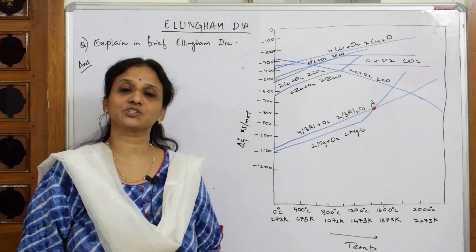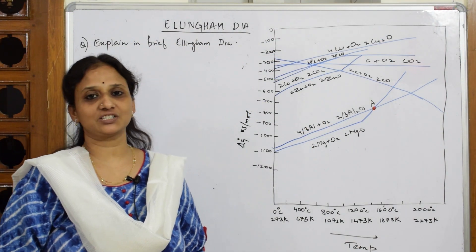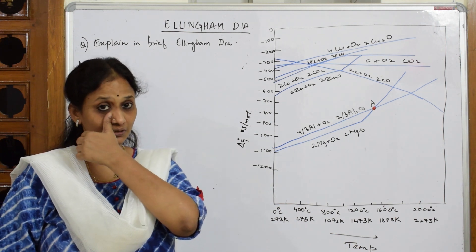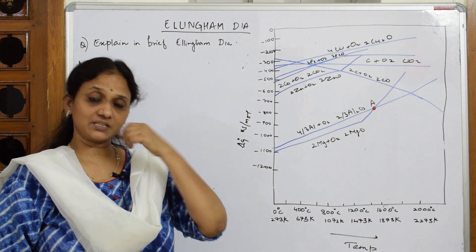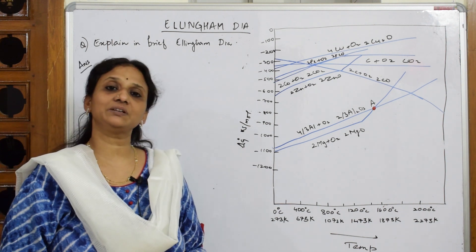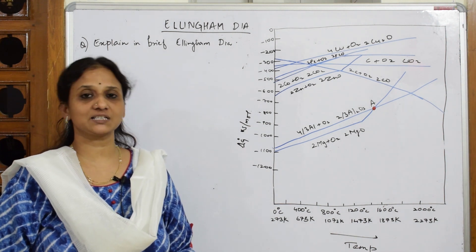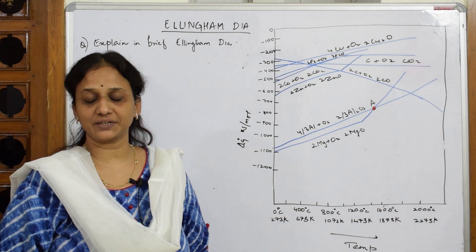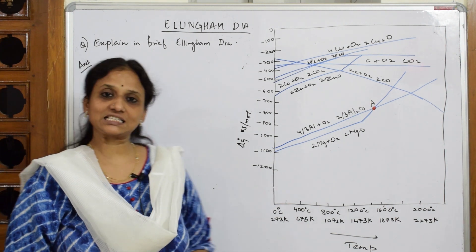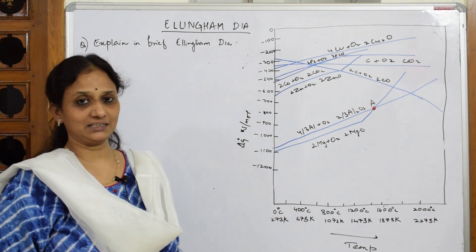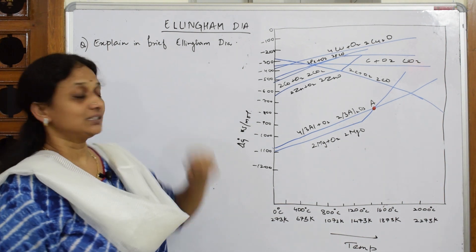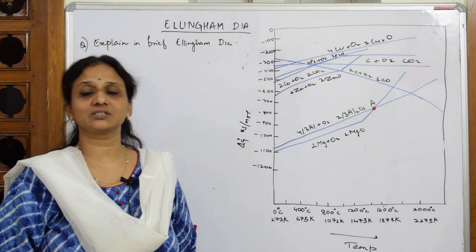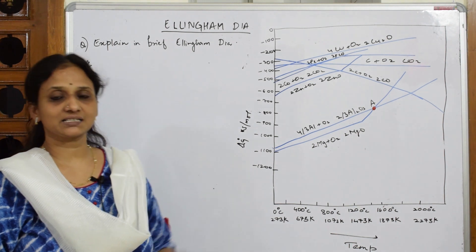Welcome back students to one more session of your metallurgy chapter. This topic will be completing the whole metallurgy chapter. In this particular topic I'll be teaching about thermodynamical aspects as well as electrochemical aspects of metallurgy. You would have seen this diagram — the Ellingham diagram — in your textbook. Let us see what are the frequently asked questions under this Ellingham diagram.